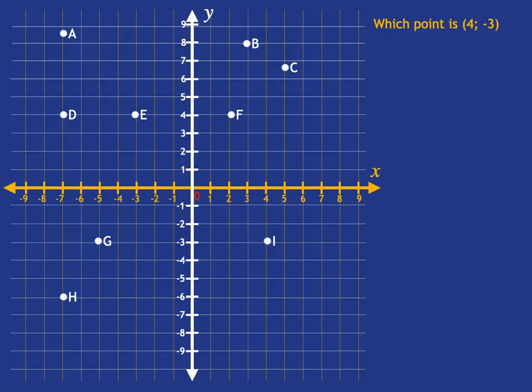4, remember? The first one is the x, which tells you how far left or right you've gone. So in this case, you've got 4 steps to the right. And then your y is negative 3, which means you've gone 3 steps down. And so the point that has the coordinates 4, negative 3 is I.